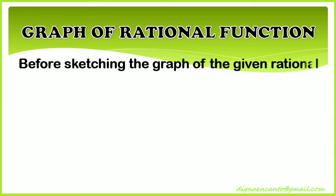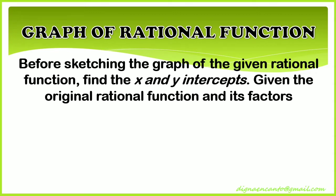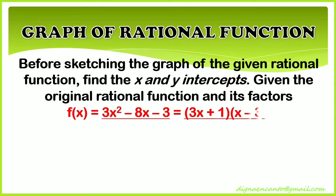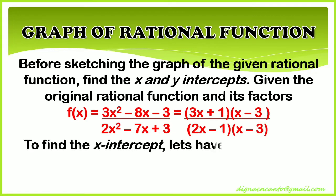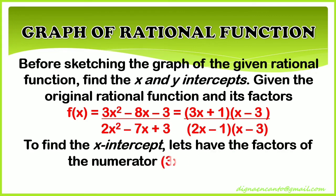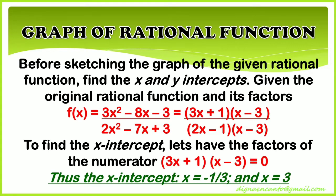Before sketching the graph of the given rational function, find the x and y intercepts given the original rational function and its factors. To find the x-intercept, set the factors of the numerator equal to 0: (3x + 1)(x - 3) = 0. Thus the x-intercepts are x = -1/3 and x = 3.